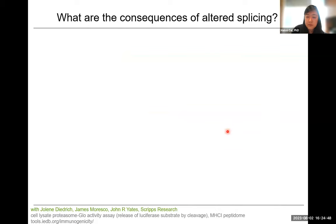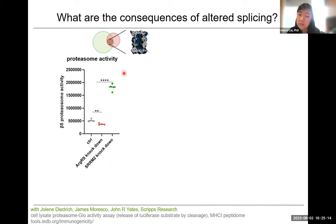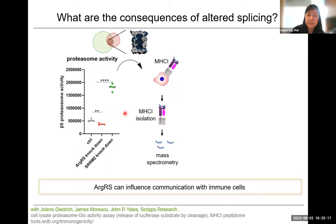We were further interested in the functional consequences. We picked one gene that was easy to assay and well-studied: PSMB5, which encodes the beta-5 proteasomal subunit. We can measure the activity of this proteasomal subunit in cells with either an ArgRS knockdown or an SRRM2 knockdown, and we can see the difference in splicing reflected in enzymatic activity.